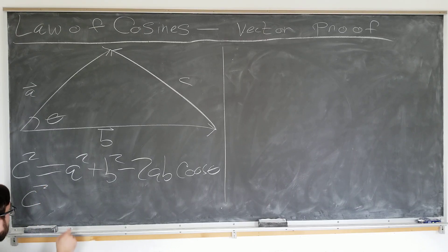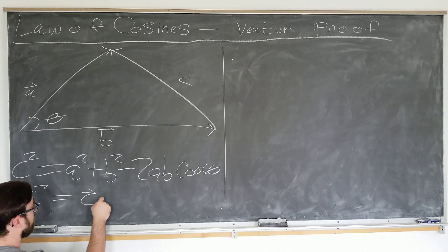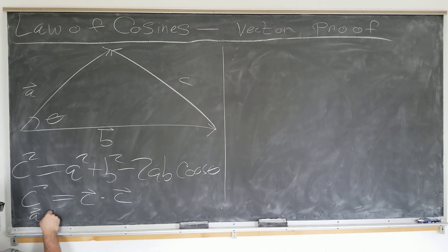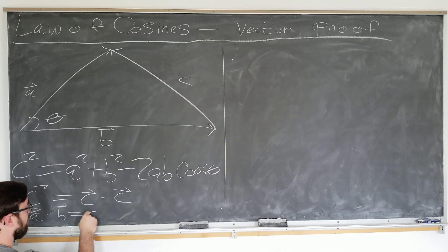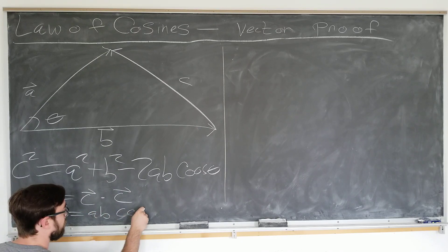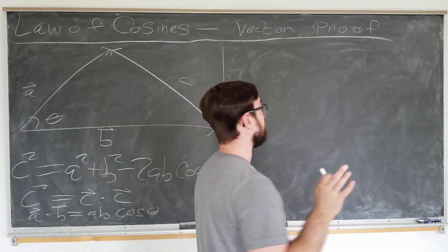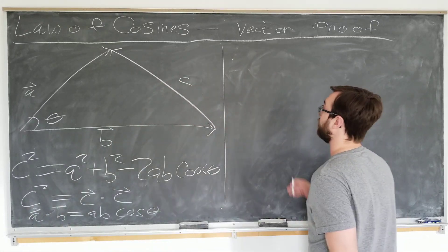The magnitude of a vector squared is equal to the vector dotted into itself, and two vectors dotted into each other is simply the magnitude of the two vectors times the cosine of the angle between them. You can already see how this looks pretty similar to our result.